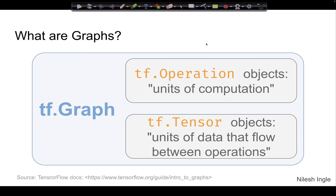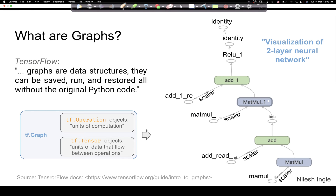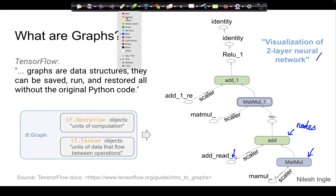Let's look at the graph before we move to the slide. Here is a graph visualizing a two-layer neural network. A graph consists of two things: first, there are nodes that we see here, and the other item are the edges — these are called the edges.